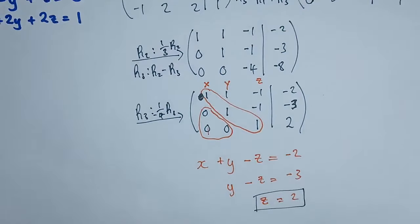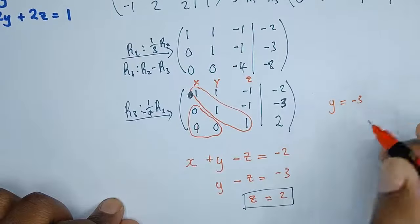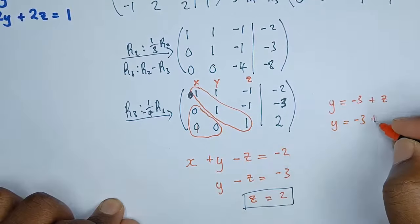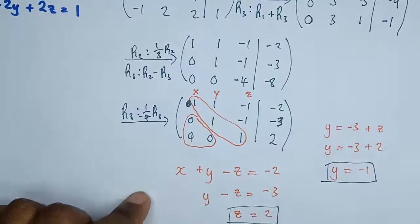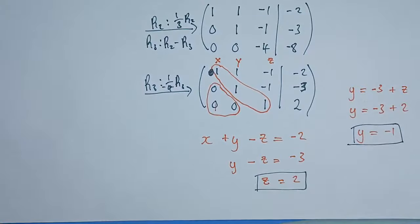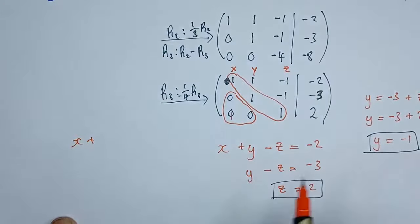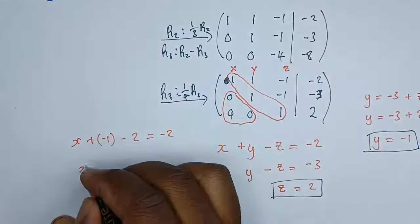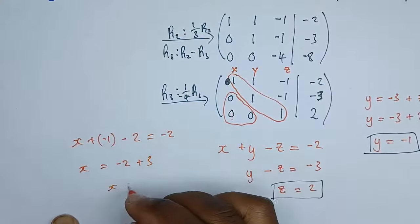Having found z, let's find y. Using the second equation: y - z = negative 3, so y = negative 3 + z. Since z is 2, y = negative 3 + 2 = negative 1. Now having found y and z, we can find x. Using the first equation: x + y - z = negative 2. Substituting y = negative 1 and z = 2: x - 1 - 2 = negative 2, so x = negative 2 + 1 + 2 = 1. The value of x is 1.